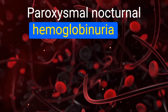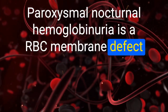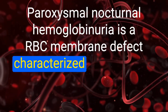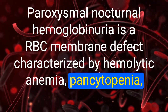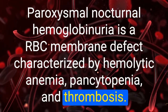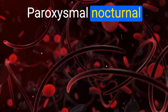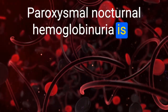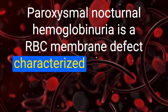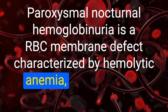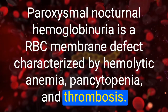Paroxysmal nocturnal hemoglobinuria is a RBC membrane defect characterized by hemolytic anemia, pancytopenia, and thrombosis. What should you think of in a patient with hemolytic anemia, venous thrombosis, and pancytopenia? Paroxysmal nocturnal hemoglobinuria.